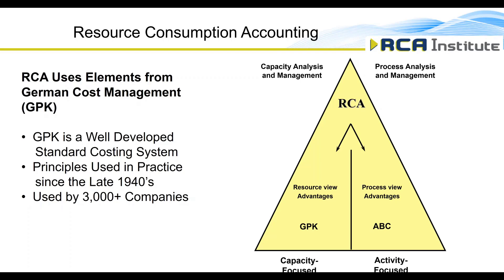GPK is little known outside of German-speaking countries, but research by the Institute of Management Accountants Foundation for Applied Research has confirmed it is in use in over 3,000 German companies. It was developed in the late 1940s by the same individual who developed the SAP control module, and has been in continuous use and is widely taught in German universities. German companies have a function known as controlling, which is very different from the controller function in the United States — in Germany, controlling is focused on the integration of operational and cost information for decision support.